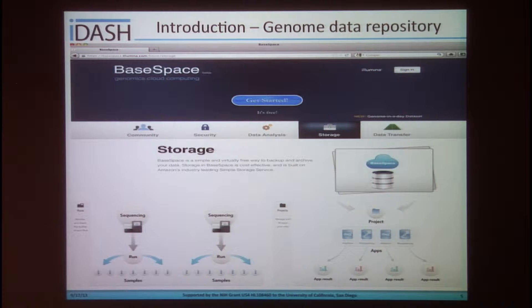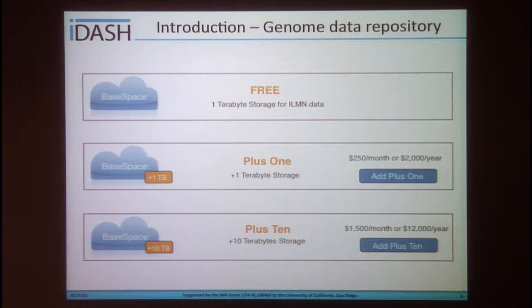BaseSpace is another genome data repository hosted by Illumina for performing genome cloud computing. BaseSpace enables raw data being sequenced to be automatically transferred from the sequencer to the cloud in real time. BaseSpace also provides many apps for workflow management, data analysis, visualization, and annotation in the cloud. However, for data storage in BaseSpace, although the first one terabyte is free for users, Illumina will charge about $2,000 or $12,000 for an additional one or ten terabytes respectively. As storage cost in BaseSpace is significant, it would be a big saving for users if they could compress genomic data efficiently.